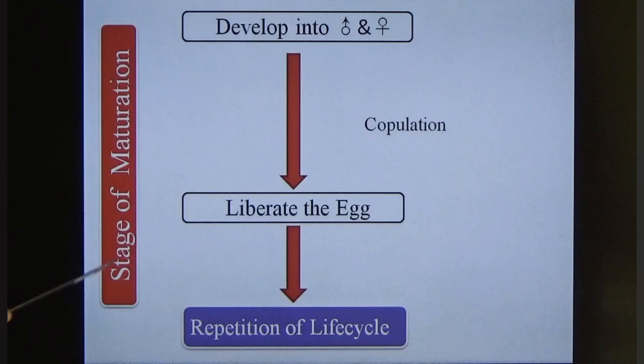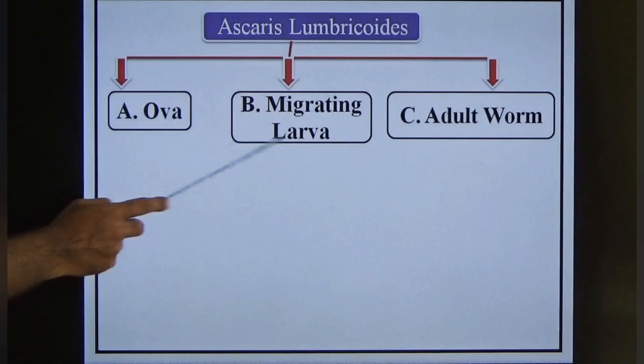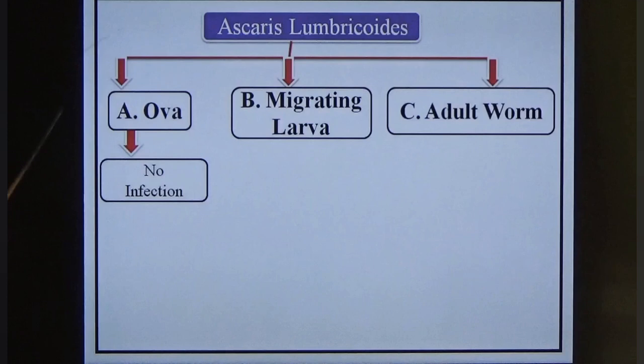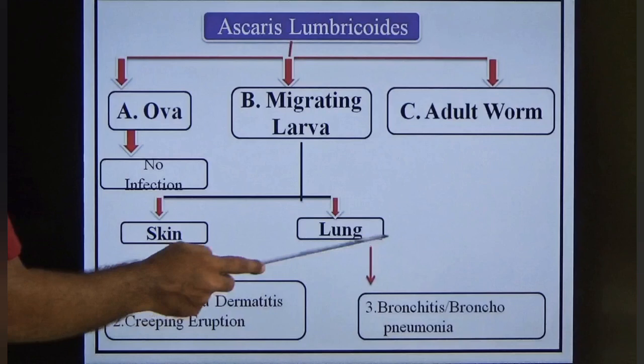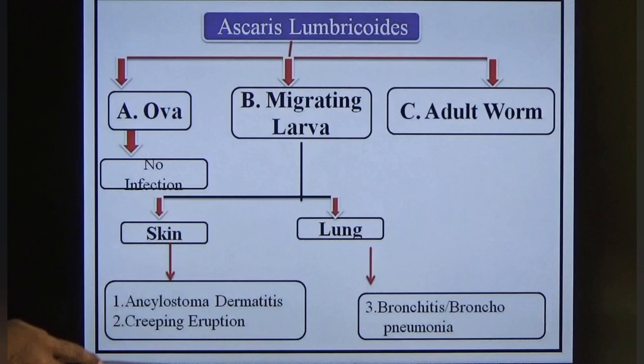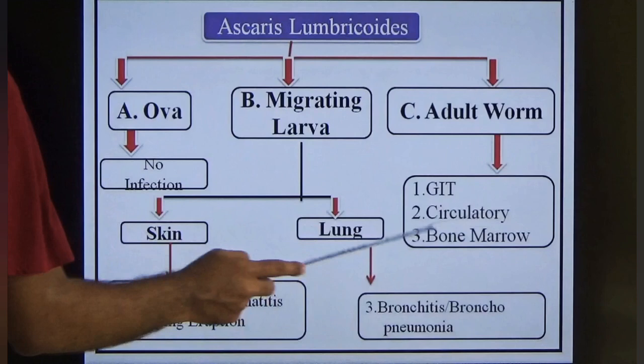Pathogenesis is studied under three headings: ova, migrating larva, and adult worm. Ova do not produce infection — the third-stage larva is the infective form. Migrating larvae affect two systems: skin (causing Ancylostoma dermatitis and creeping eruptions) and lungs (causing bronchitis or bronchopneumonia). Adult worms affect three systems: gastrointestinal tract, circulatory system, and bone marrow.